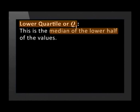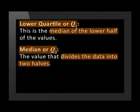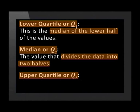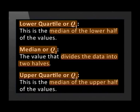The lower quartile, or Q1, is the median of the lower half of the values. The median, or Q2, is the value that divides the data into two halves. The upper quartile, or Q3, is the median of the upper half of the values. These quartiles represent three boundary values that divide the data into four parts. Remember that before we find the quartiles, we need to arrange the data in ascending order.